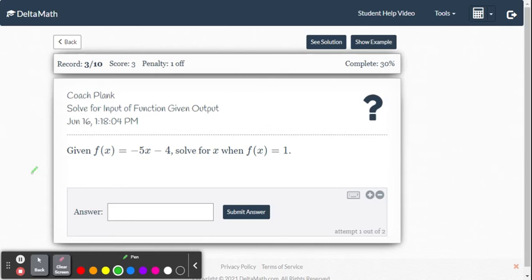One more example. f(x) equals negative 5x minus 4. Solve for x when f(x) equals 1. So again it's giving us the output value is 1 and saying what is the input value that gives you 1. So 1 equals negative 5x minus 4.